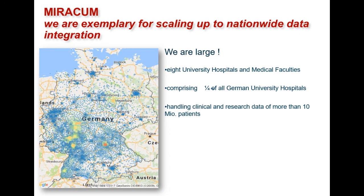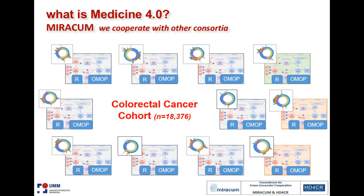He talked about Miracom, and the beginning of Miracom was eight university hospitals. Now we are 10 and in the process of negotiating with an 11th. This is from the very early one, and you see in Germany, by the postal zip codes, the patients that are involved in or registered in Miracom. And the interesting thing is: how can we access all these data and make use of them?